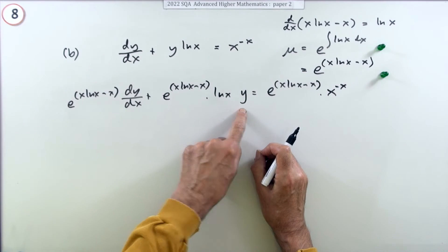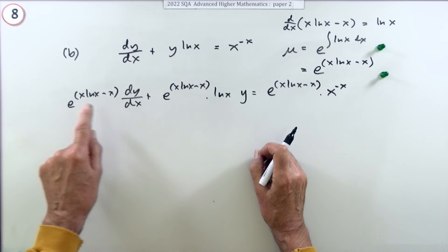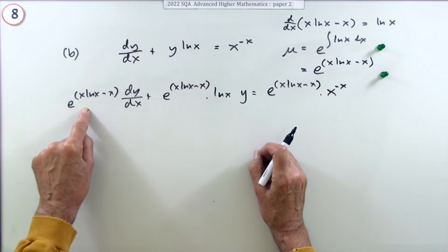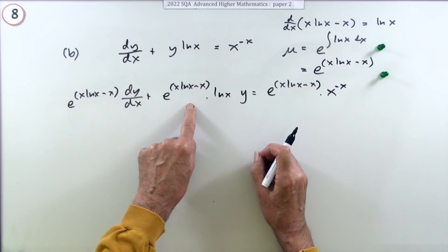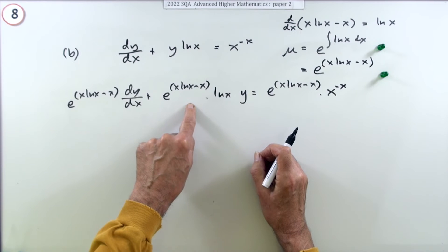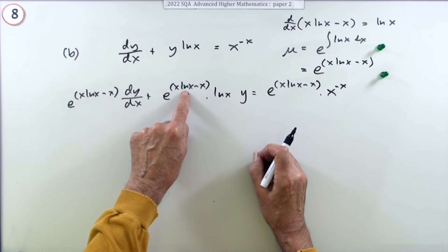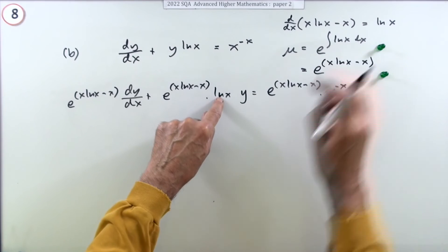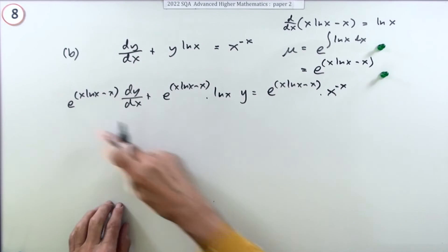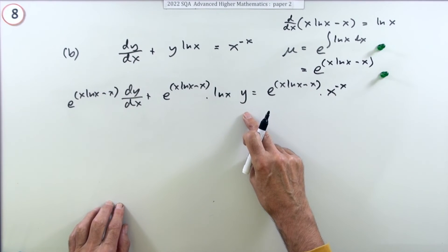And what that does is it reduces this, although I know it's made it bigger, to the pattern for the product rule. Because look, here y's been left alone and here it's been differentiated. So that must be the function of x left alone and this must be the function of x differentiated. And it is, because if you differentiate that, e to the anything stays as e to the anything multiplied by the inner derivative which was ln(x).